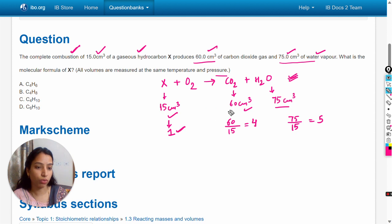Or we can write here: 1 mole of X after combustion produces 4 moles of carbon dioxide and 5 moles of water vapor. So this is the reaction equation.